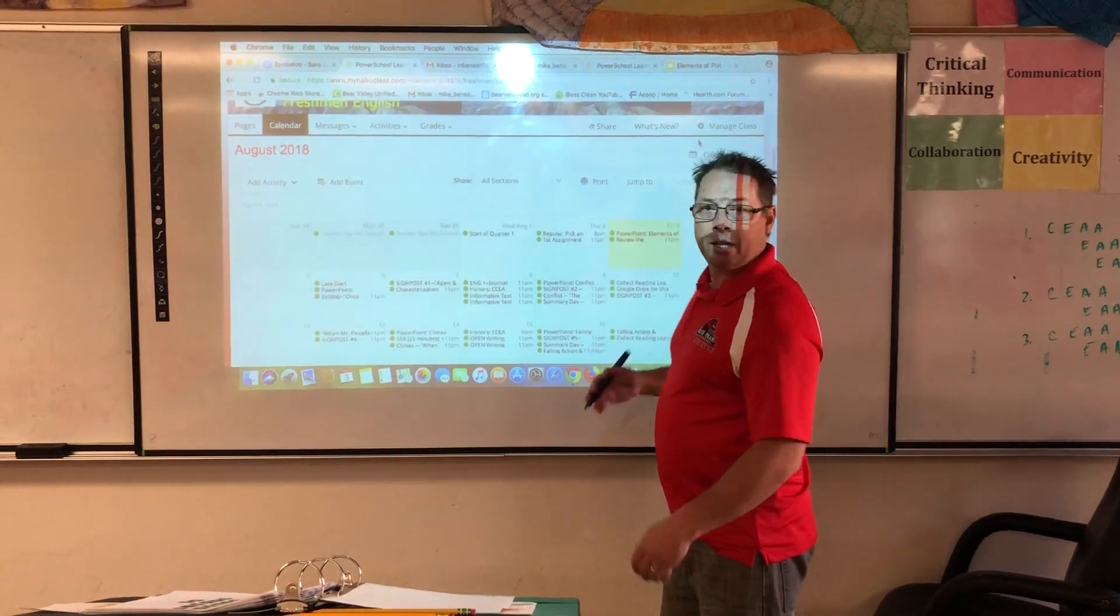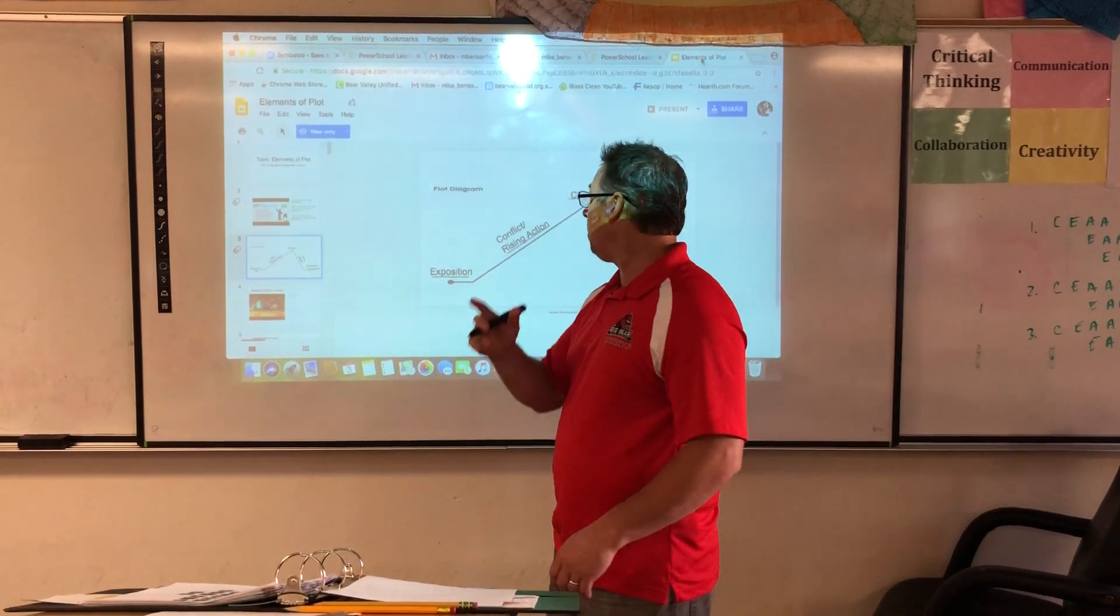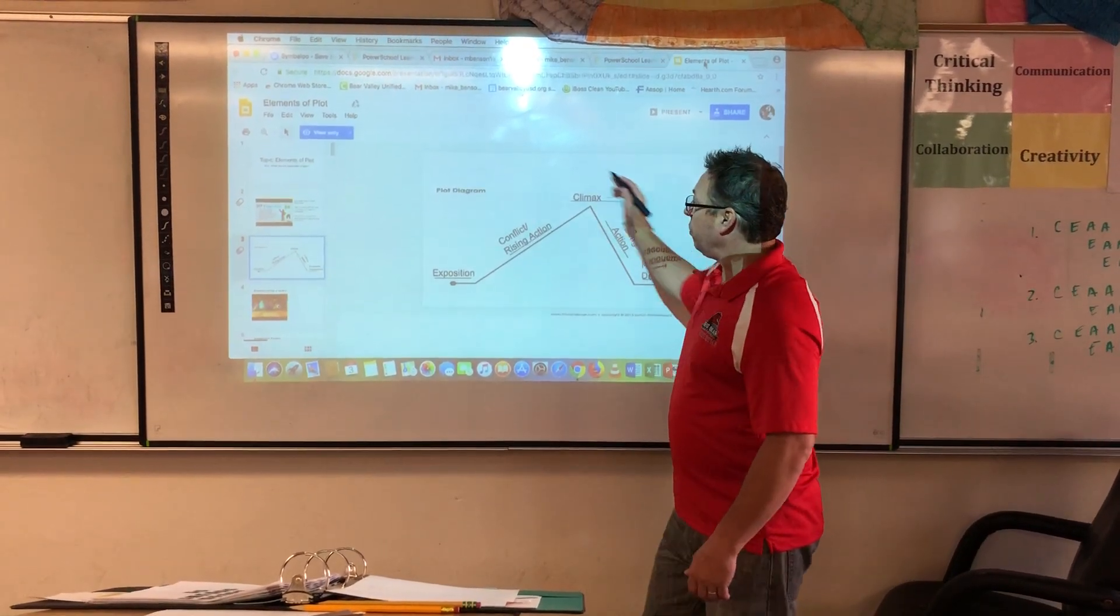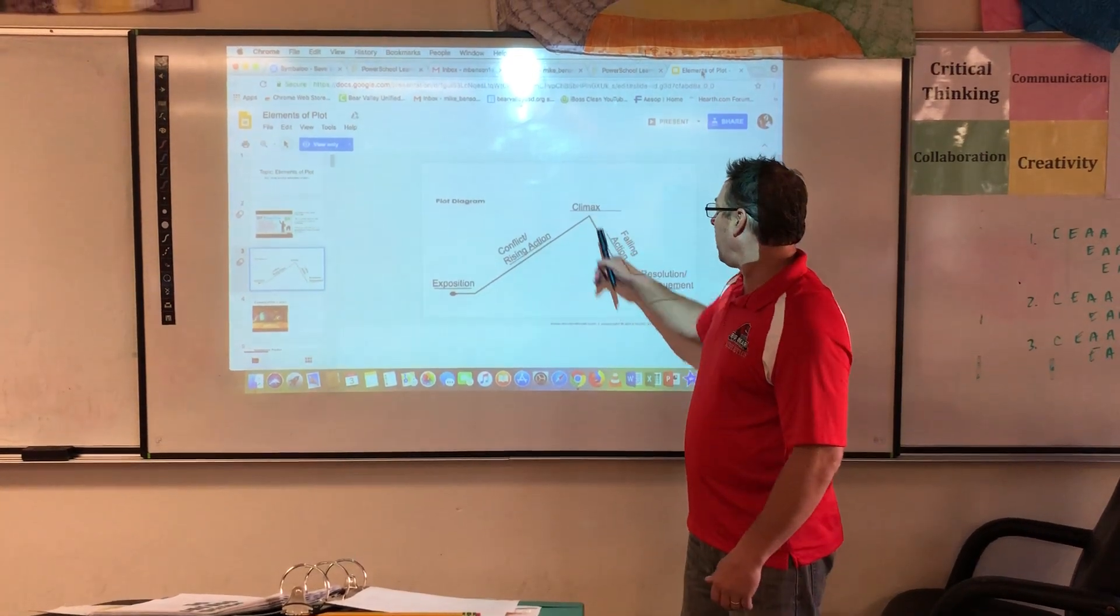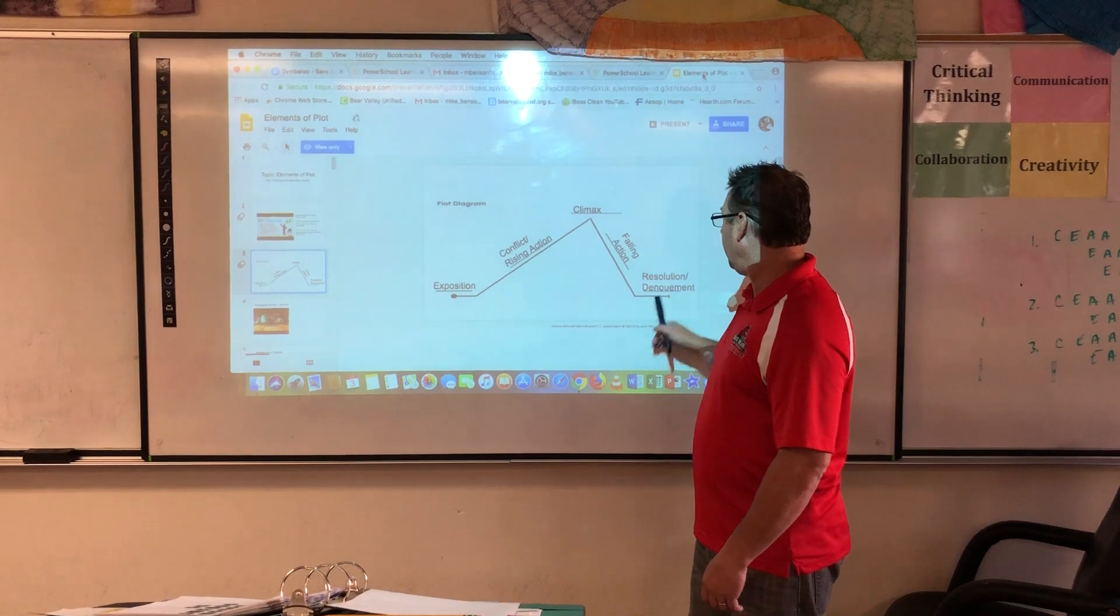Another way of looking at it is you can go to what we call the plot sheet, and this is the plot diagram. This is what it looks like. You have the exposition, you have the conflict, the climax, the falling action, and again, the denouement.